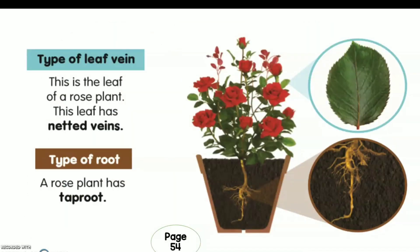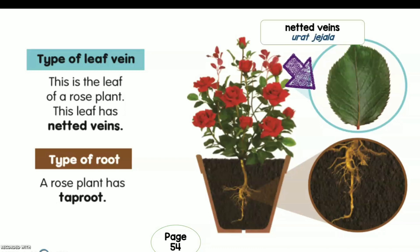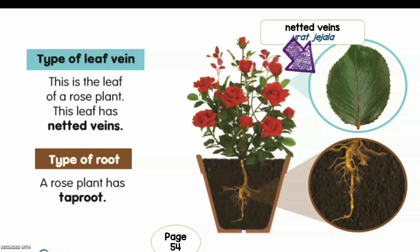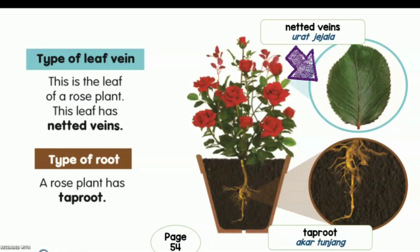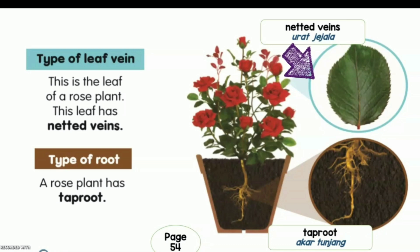These notes are from page 54 of the textbook — nota ini adalah daripada buku teks buka surat 54. This is the leaf of a rose plant. The leaf has net veins — daun pokok bunga ros jenis urat terjala.